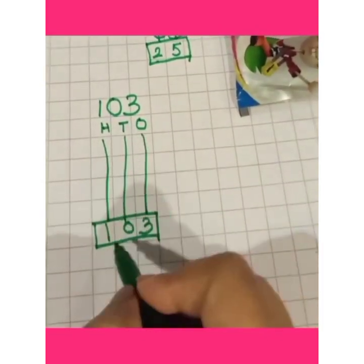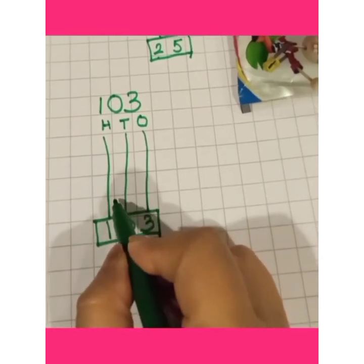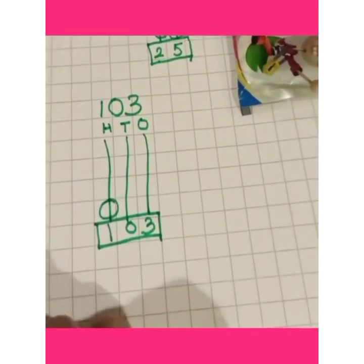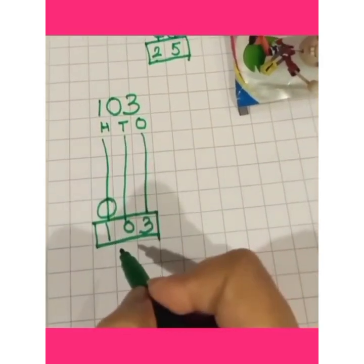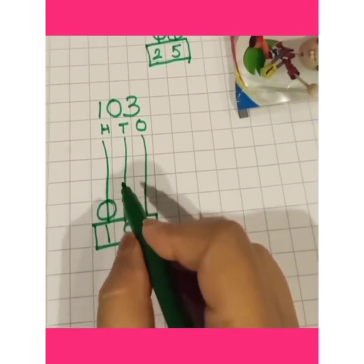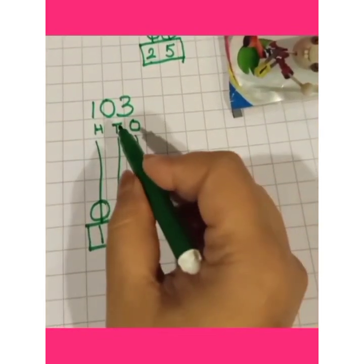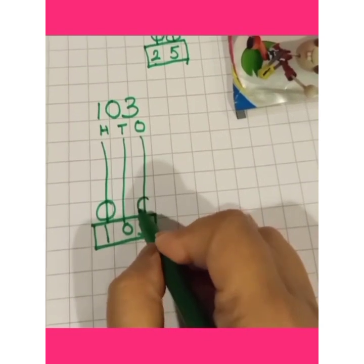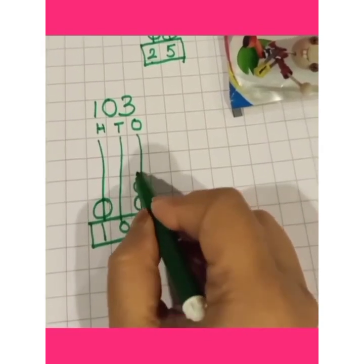In 100's place, only 1, so draw 1 bead. In 10's place, 0, so no bead. And in 1's place, 3, so draw 3 beads.